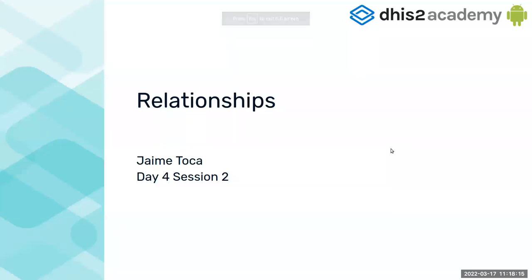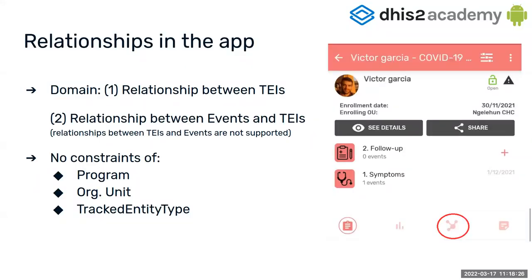Welcome to the second session of the day. Today I will explain relationships in the Android app. When we talk about relationships in the Android app, it's important to mention that we only support relationships between tracked entity instances (TIs) and relationships between events and TIs. We do not support the other way around — events have to be on the left side of the relationships. We also don't support enrollment. There are no constraints when it comes to programs or tracked entity type — for example, you could have a relationship between two persons in different programs, or a relationship between a person and an area that are different tracked entity types.